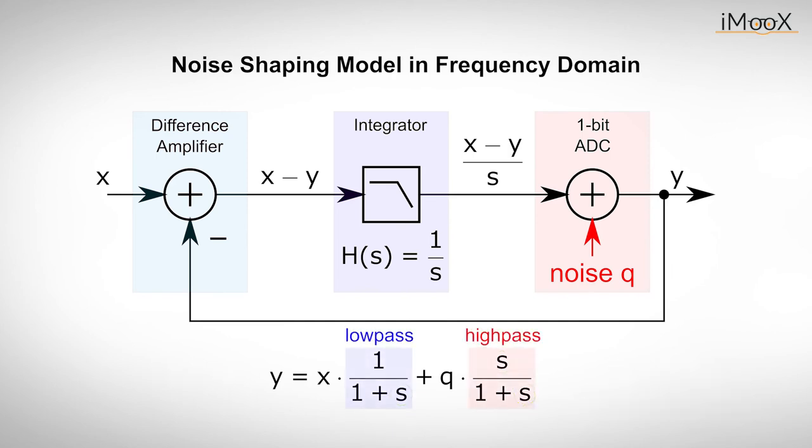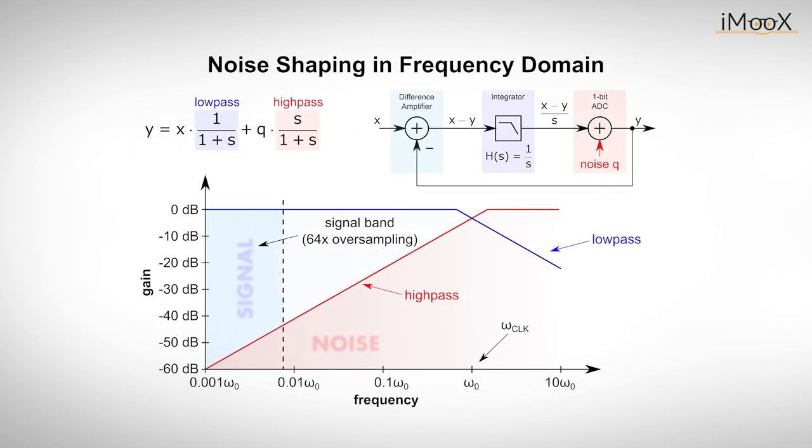In other words, the integrator that serves as a low-pass filter for the input signal acts as a high-pass filter for the quantization noise. If we look at this diagram, we can see that the quantization noise is attenuated at low frequencies. Its spectrum increases linearly up to the oversampling frequency. Since the input signal is only attenuated at high frequencies and the frequency range of interest is at the lower end of the spectrum, the quantization noise is mostly outside of the signal band.